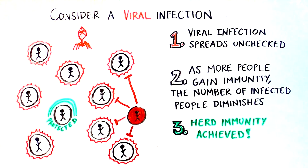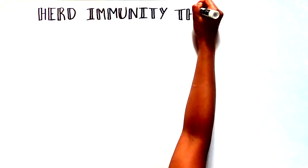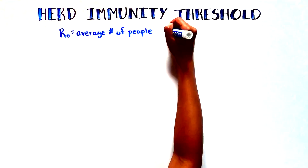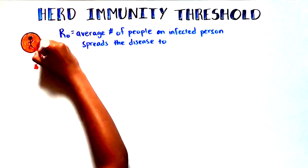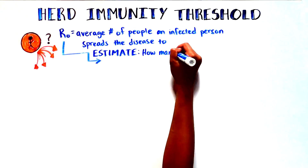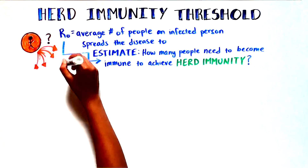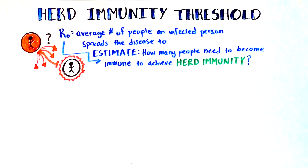Achieving herd immunity requires the number of immune individuals to reach a certain threshold. The herd immunity threshold is calculated based on a number called R0, which refers to the average number of people an infected person spreads the disease to in a completely susceptible population. Using the estimated R0 for a pathogen, we can estimate the number of people who need to become immune for herd immunity to take effect. So the higher the R0, the more people who need to develop immunity to block sustained transmission.